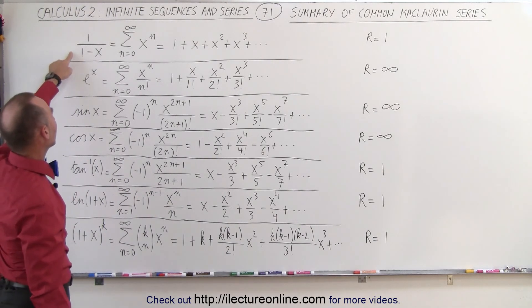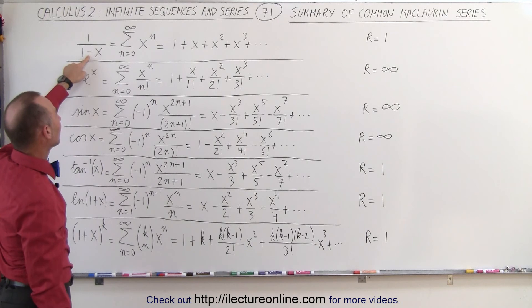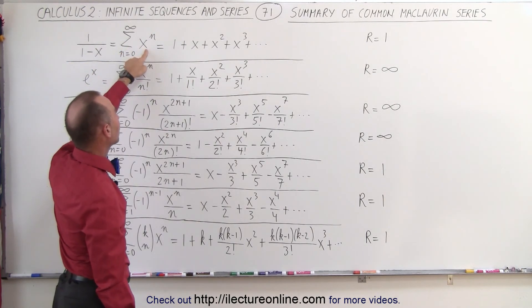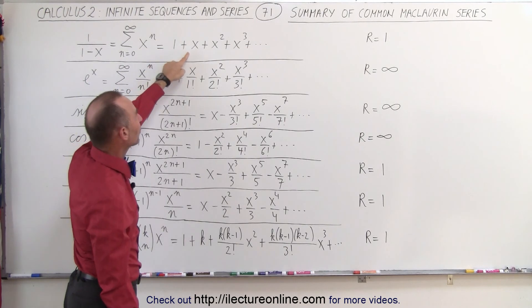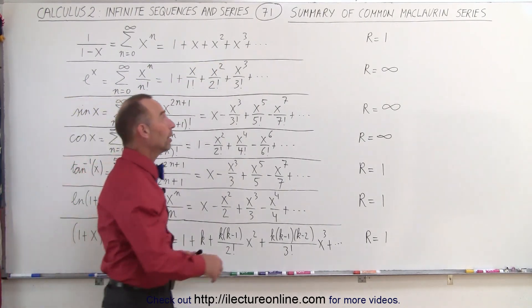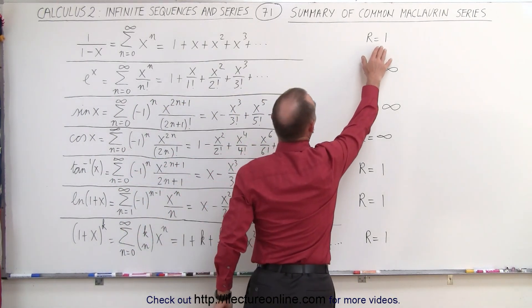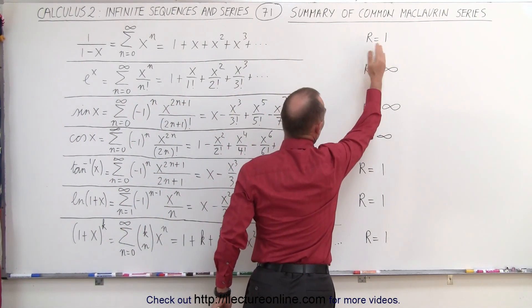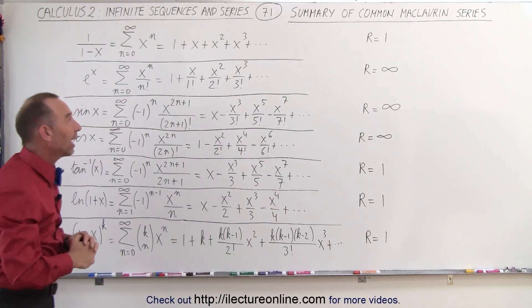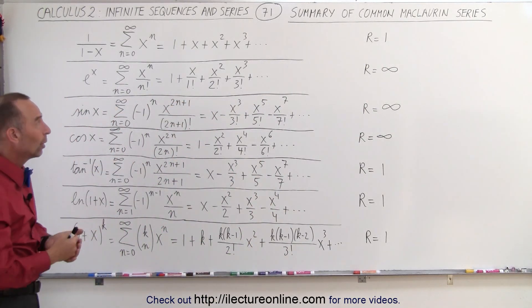Starting with the very first one that we had, 1 over 1 minus x, can be expressed as the infinite sum from n equals 0 to infinity of x to the n power, which is 1 plus x plus x squared plus x cubed. Of course that only works when x is between negative 1 and 1. So the radius of convergence is 1 in that case.